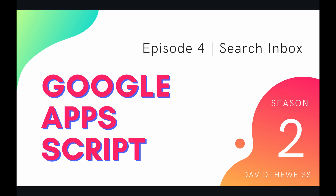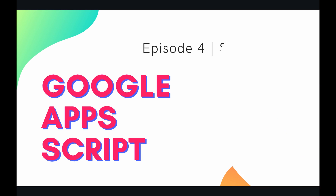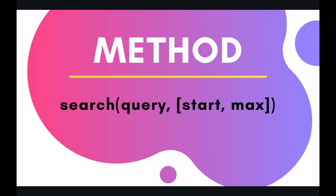Welcome to episode 4 of our Gmail service playlist on the Google Apps Script course. In this video we're going to be talking about how to search through your inbox. There's one method to do this and it's called search — very easily named. The required parameter is your query and the two optional parameters are start and max. Let's jump into the code and learn how to search our inbox programmatically.